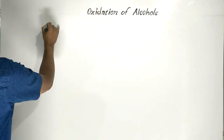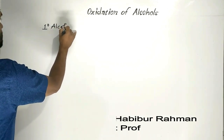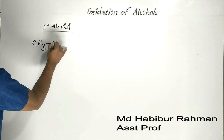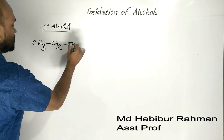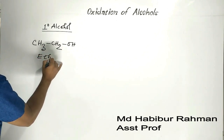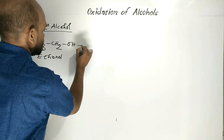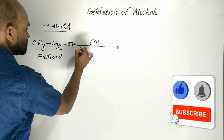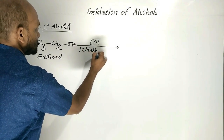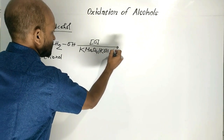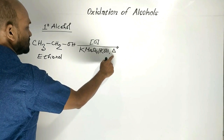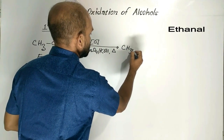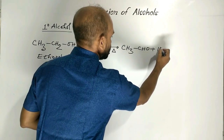Let us see first of all oxidation of 1 degree alcohol. Suppose this is 1 degree alcohol — ethanol. When ethanol is oxidized in presence of basic potassium permanganate, the reaction is carried out by heating. Then firstly, ethanol changes to ethanal. Water is formed as a by-product.